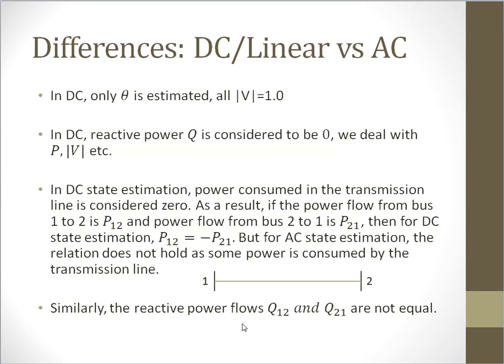If the power flow from bus 1 to bus 2 is P12 and the power flow from bus 2 to bus 1 is P21, then P12 becomes equal to minus P21. However, in AC state estimation, this is not true. We consider that there will be some loss in the transmission line and they will not be equal. It is also true for the reactive power as well.